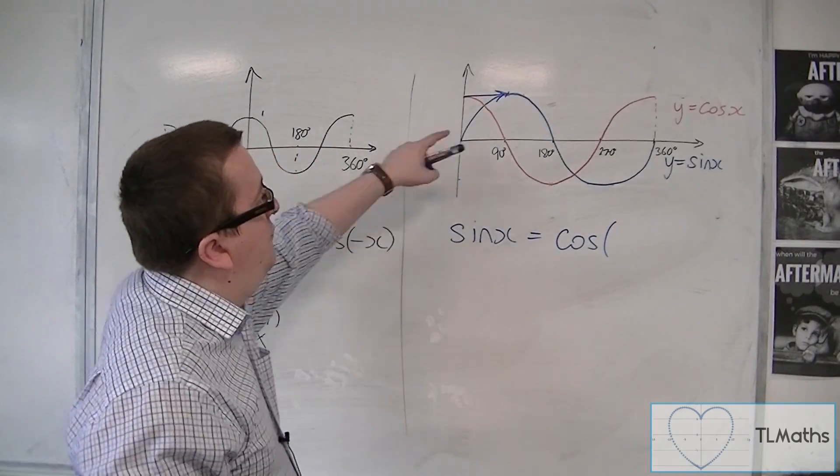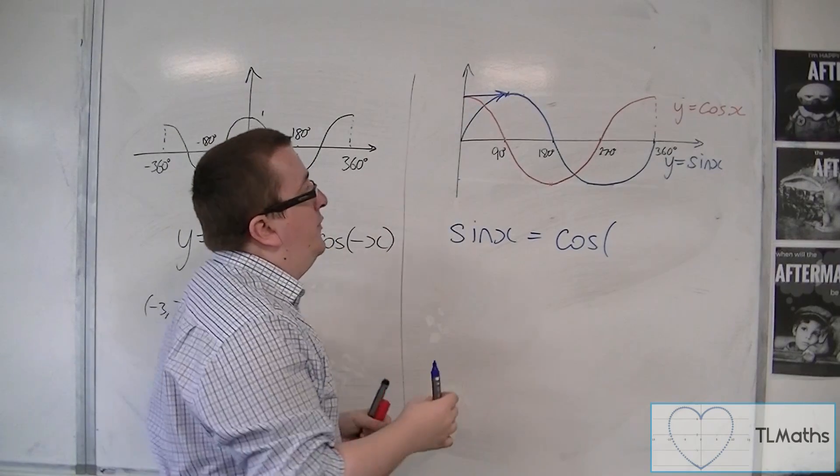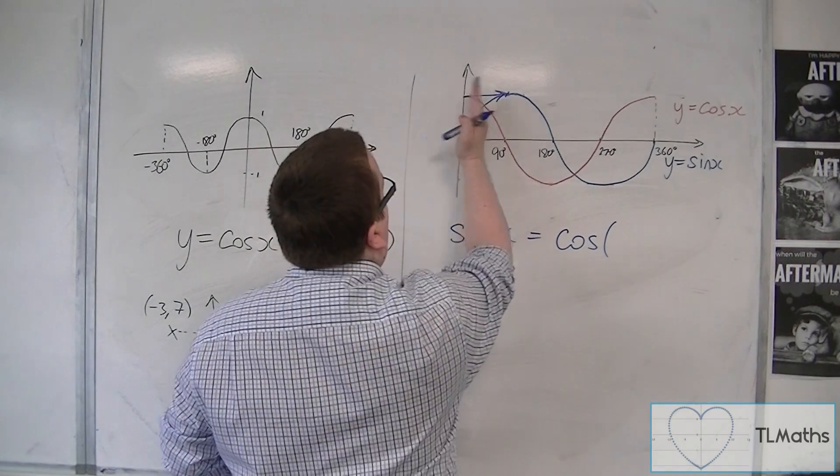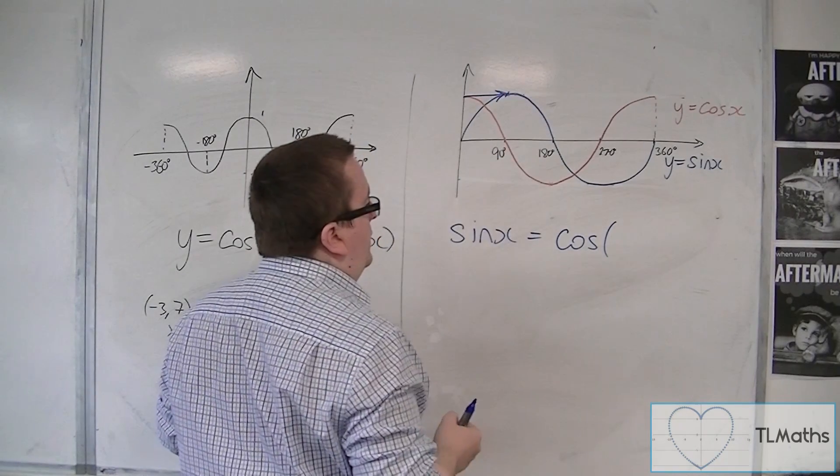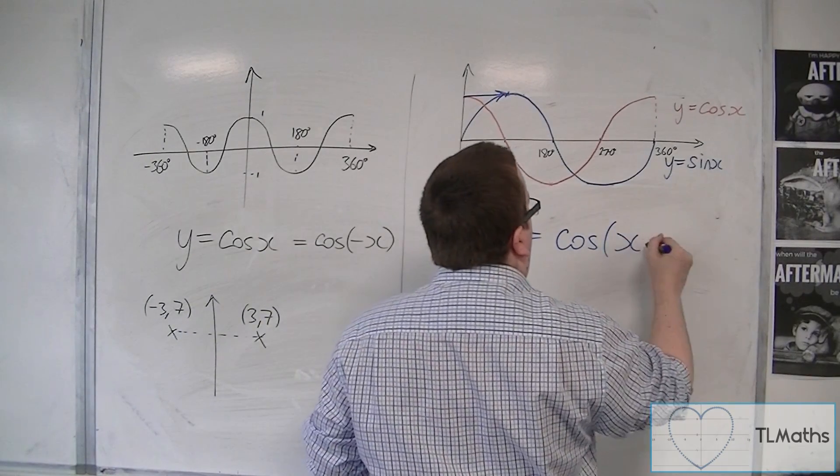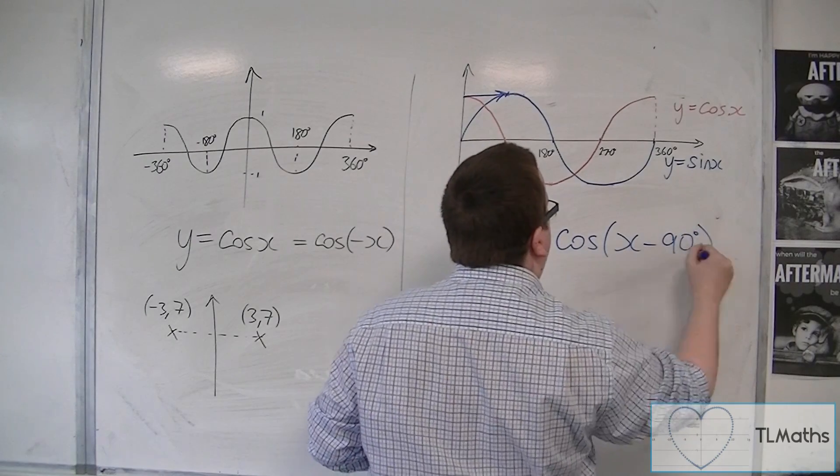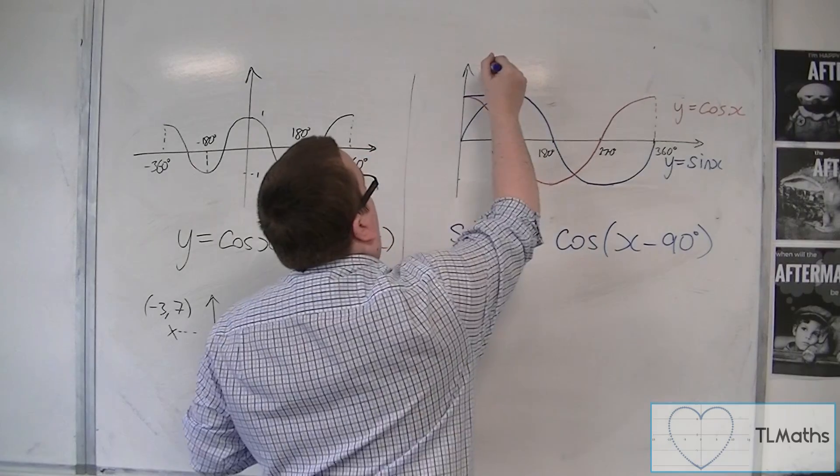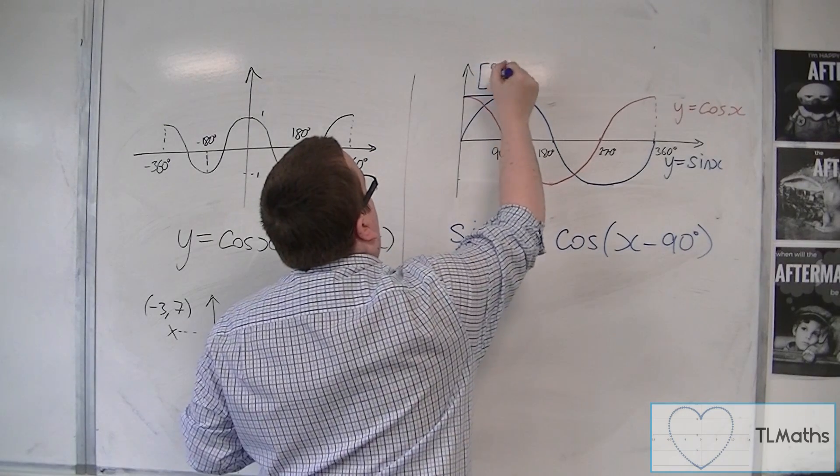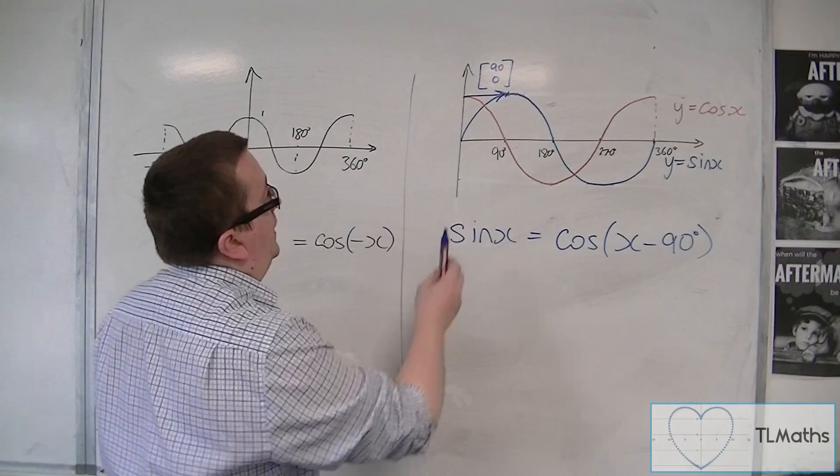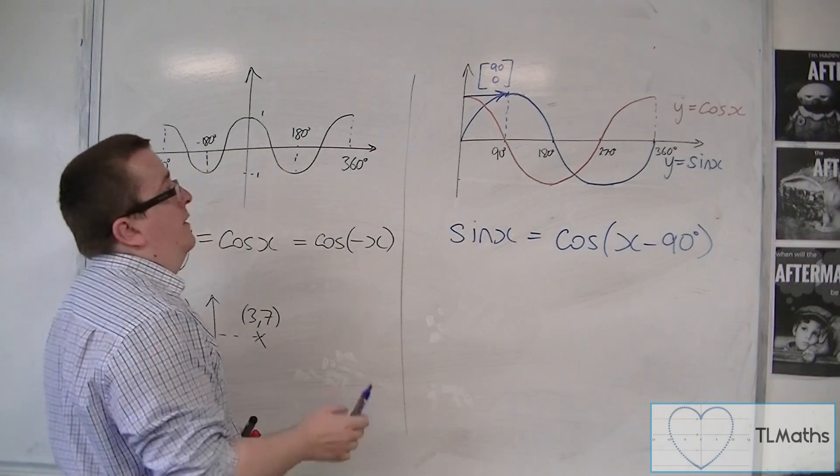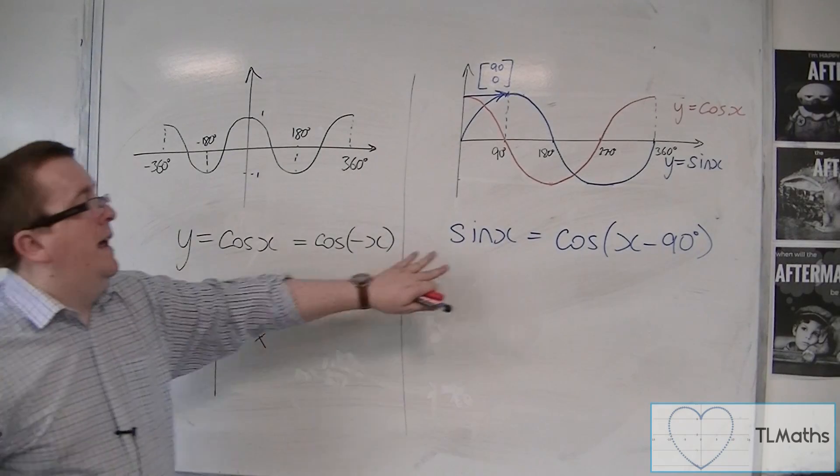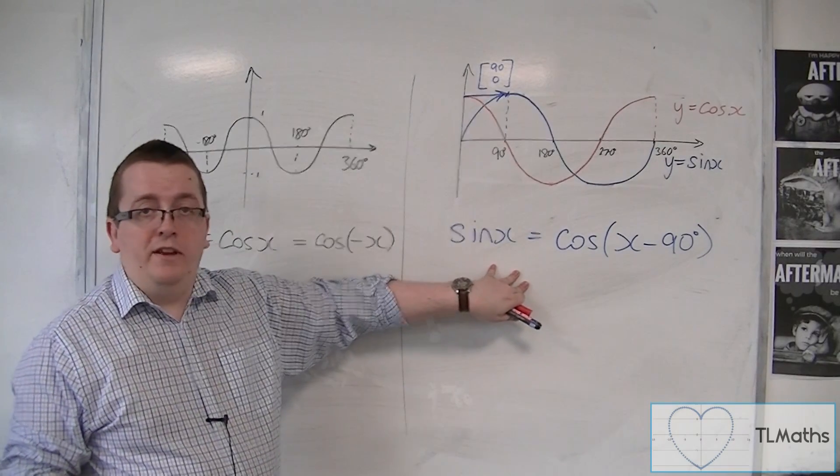By a vector which is not going up or down in the y-axis, but it's just going along by 90 degrees. And that would be x minus 90. So, this vector would be 90, 0. Because we can see that that point is at 90, we're going from 0 to 90 there. So, sine x is cos of x minus 90.